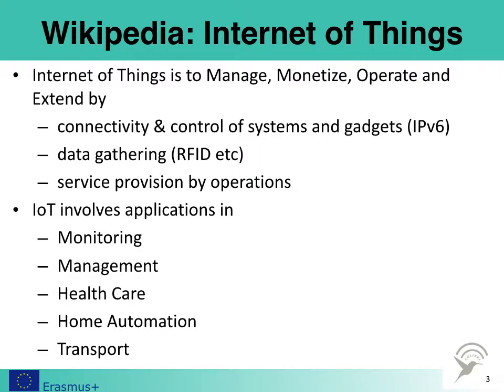This Wikipedia paper shows that the Internet of Things is to manage, monetize, break and extend activities by controlling connected systems and gadgets, do data gathering and provide service by operations.